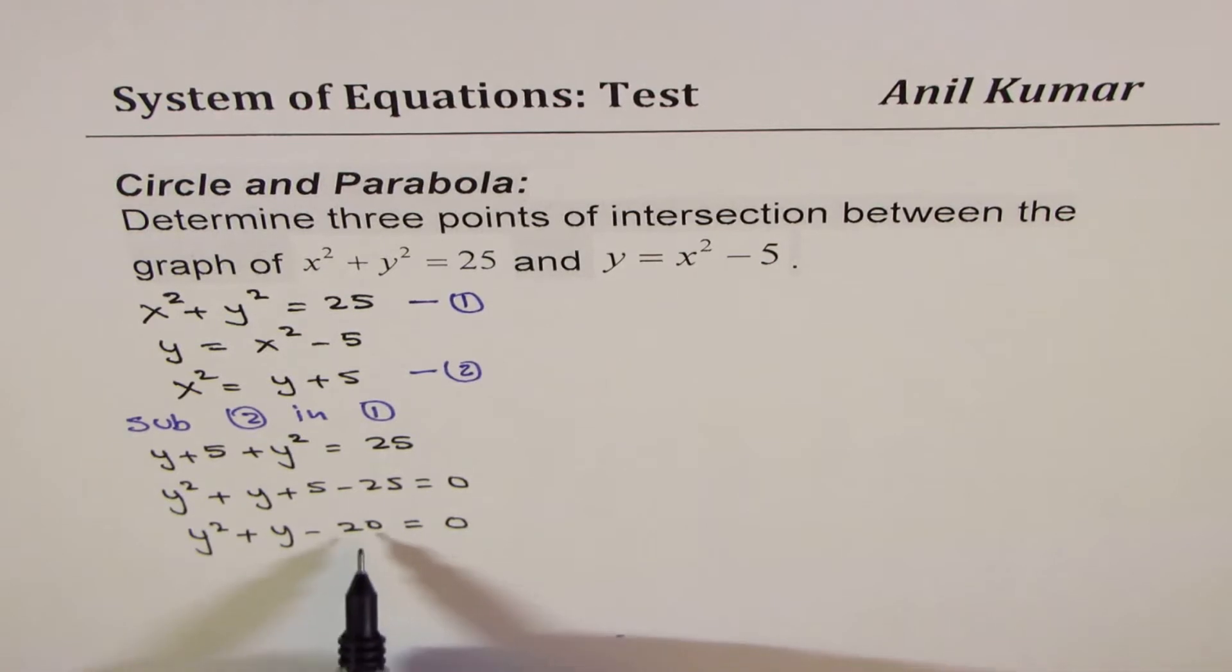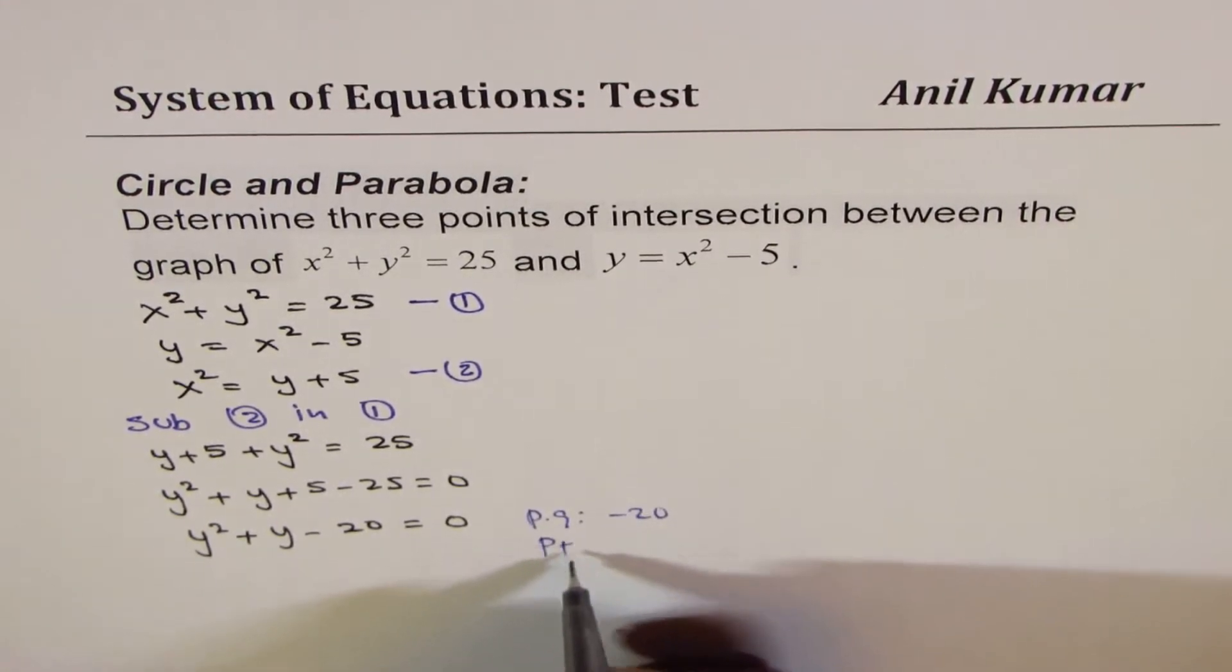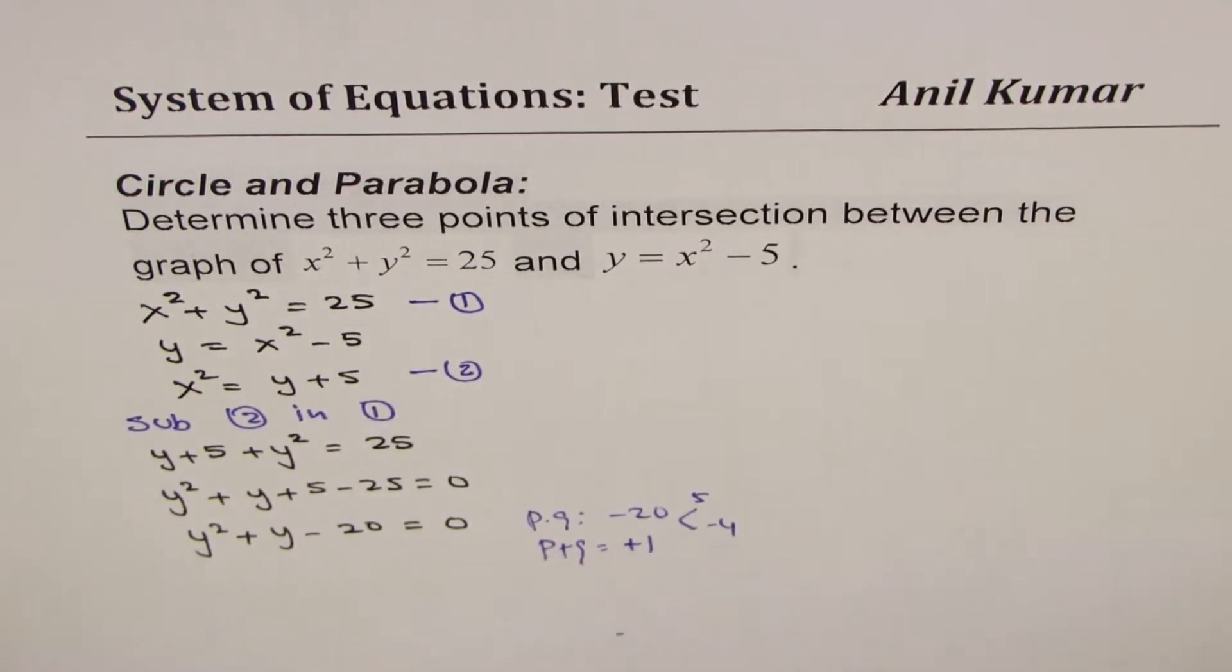Now you could factor this. We're looking for two numbers whose product is minus 20 and whose sum should be plus 1. So the numbers are 5 and minus 4.